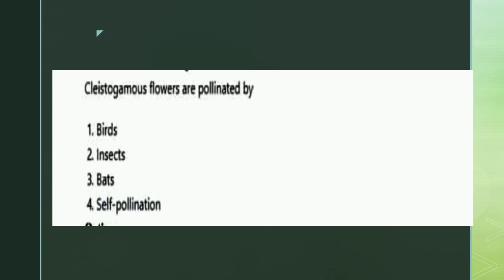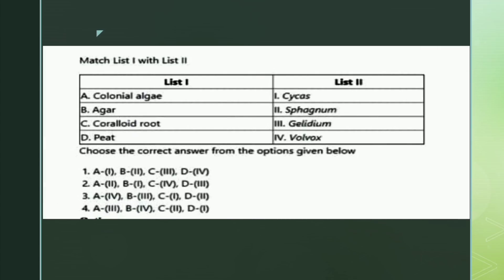The next is a match the following. List one: colonial algae, agar, coralloid root, peat. List two: Cycas, Sphagnum, Gelidium, Volvox. The right answer is option three: colonial algae - Volvox, agar - Gelidium, coralloid root - Cycas, peat - Sphagnum.